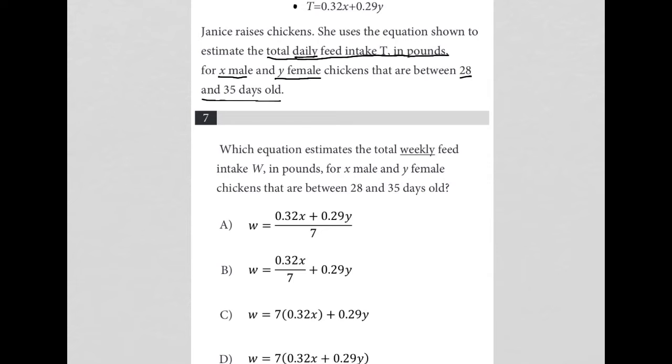So if my T equals 0.32X plus 0.29Y is daily, then you would assume that if I multiply this whole thing by seven, which will give me 7T equals what?